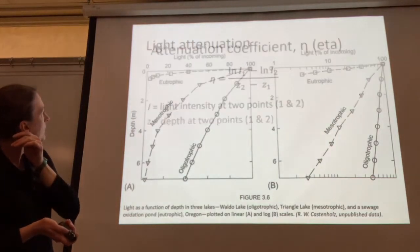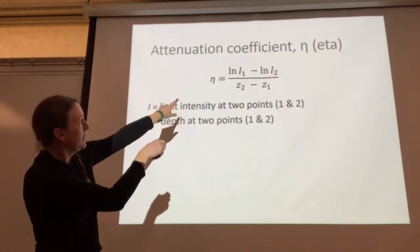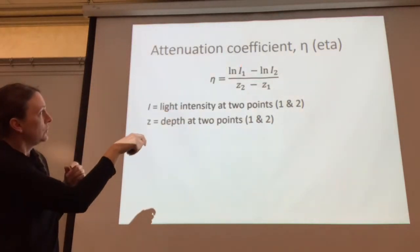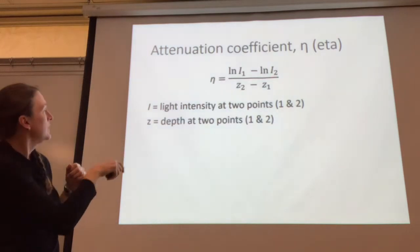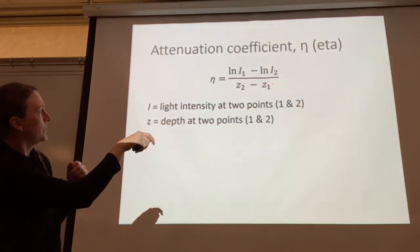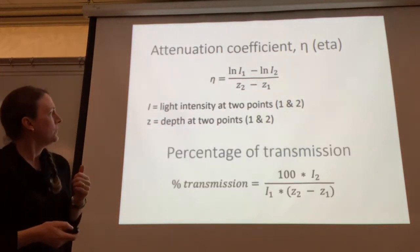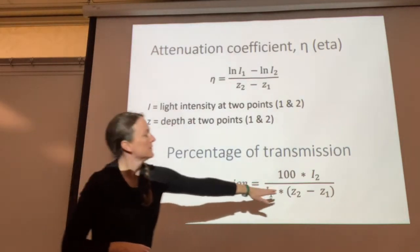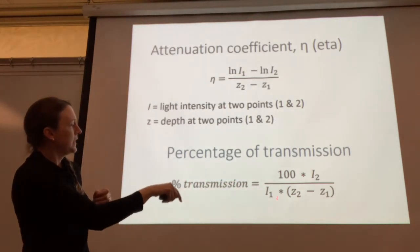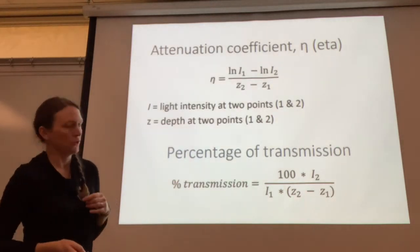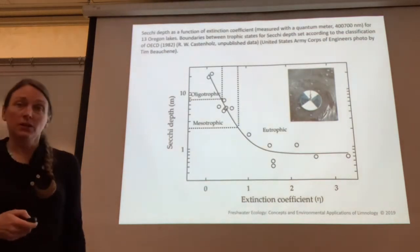You can calculate the attenuation coefficient, called eta (η), by taking the natural log of the light intensity at point one minus the light intensity at point two — for example the surface versus 10 or 20 meters — divided by the depth difference between points one and two. You can also calculate the percentage of transmission as 100 times the intensity at point two divided by the intensity at point one, again over the distance between the two points. We'll work through these calculations in workshop.